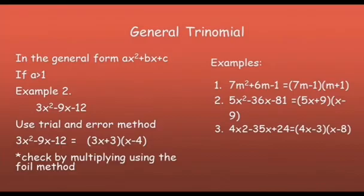FOIL stands for first terms, outer terms, inner terms, and last terms. To get the middle term, we simply add the product of the outer and the inner terms.